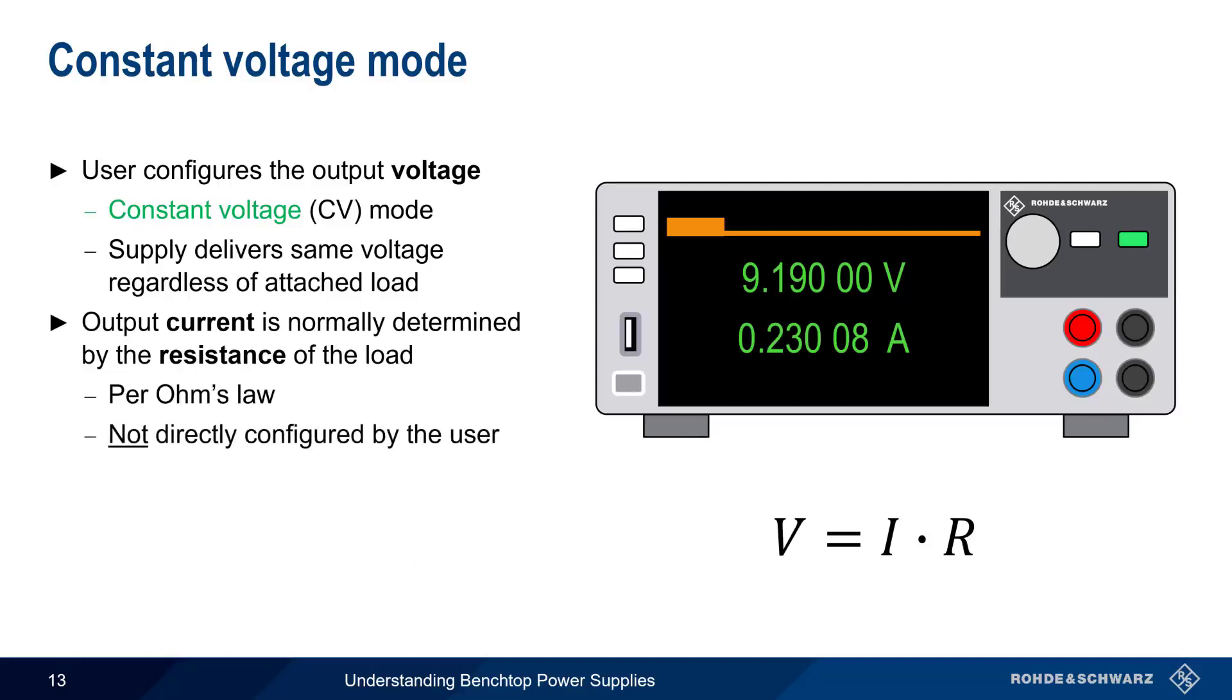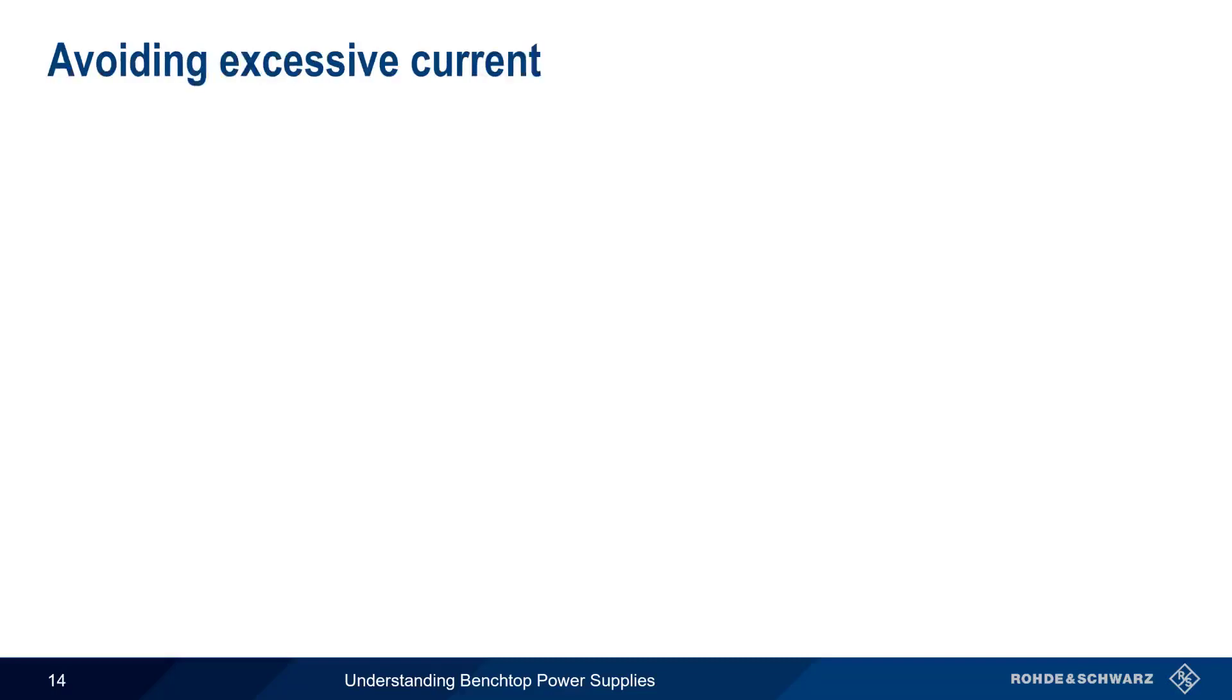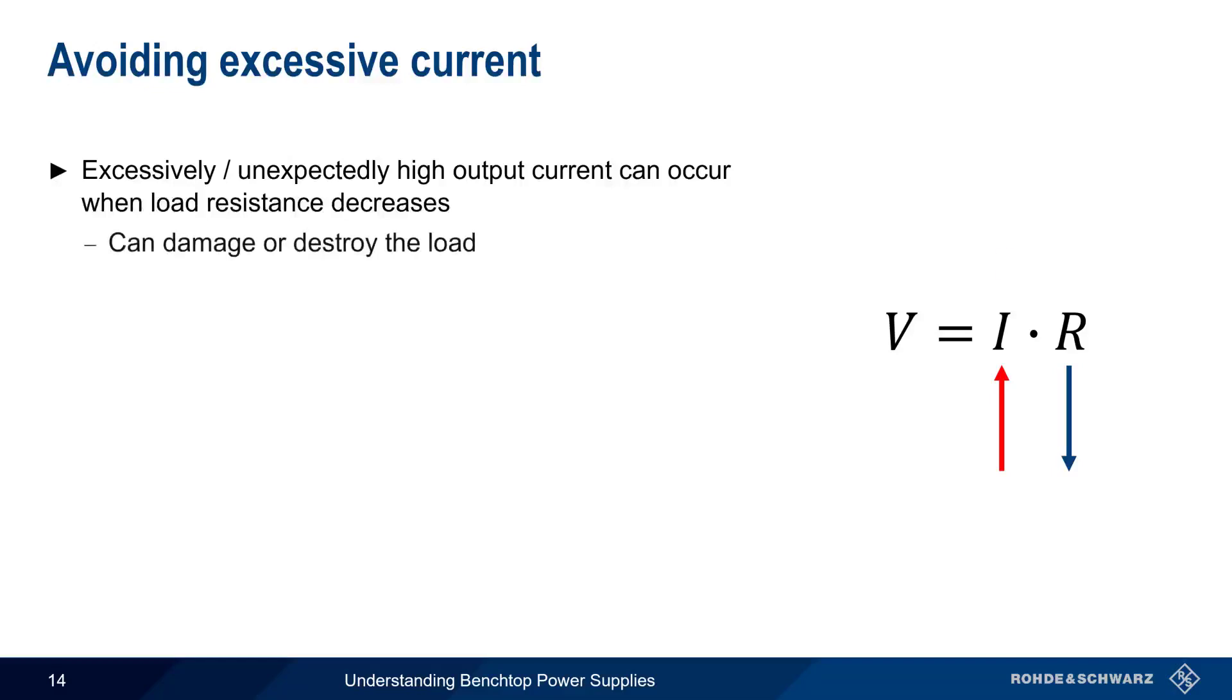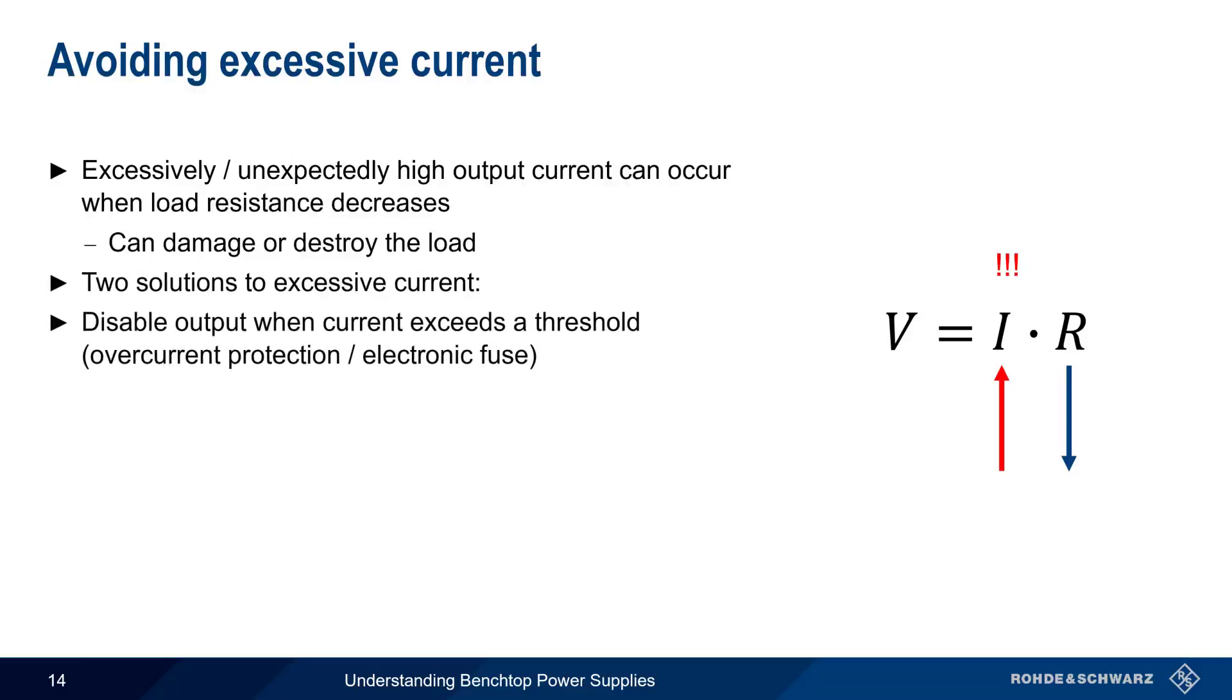When the user enters a value for current, this value sets the maximum allowable output current. Excessively and or unexpectedly high current can occur when load resistance decreases. Since high current often can damage or destroy a load, it's important to find a way to prevent the situation from occurring. There are two main ways that power supplies do this. The first is something we just discussed a few moments ago. The supply disables or switches off the output if the readback value indicates the current threshold is being exceeded.